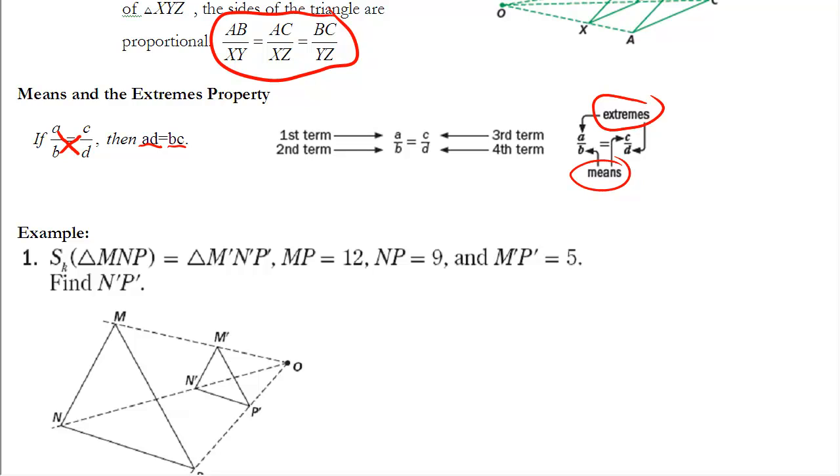And we can use that. It doesn't have to just be AD equals BC. We could write this as AD over B equals C, we could write it as AD equals BC over D. So we can do that in any way. We can always use that cross multiplication piece as we're solving a proportion, and anytime we're doing that we're using the means-extremes property.